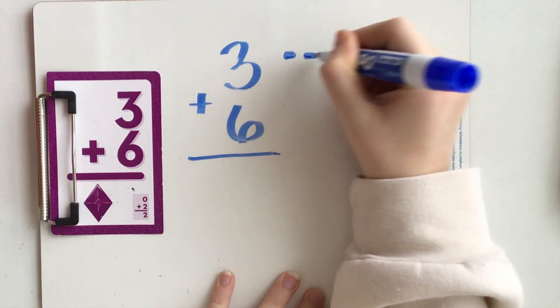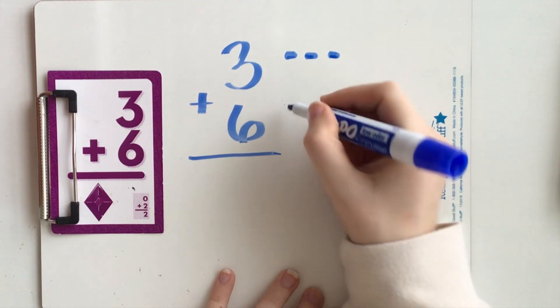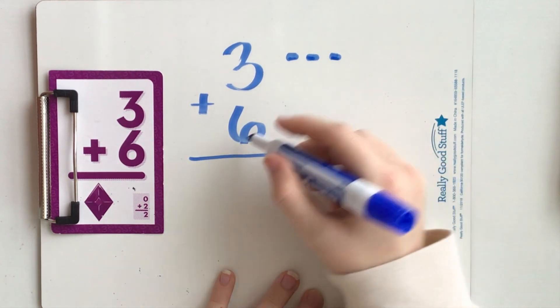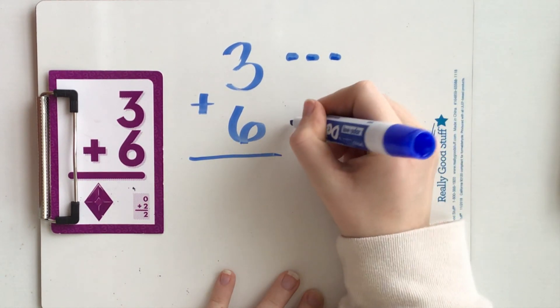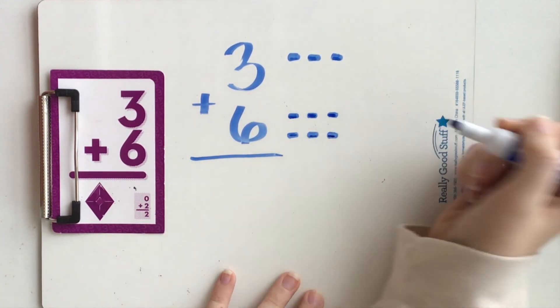One, two, three. Three dots on this side. How many dots would I put over here? Six. One, two, three, four, five, six.